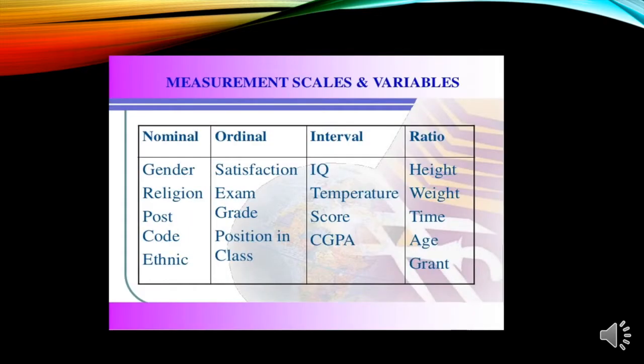We have the measurement scales and variables. As we have said, data are divided into four: nominal, ordinal, interval, and ratio. When we say nominal, it is all about gender. Some parts of data are gender, so you cannot categorize or rank them. We also have religion, so you cannot rank each religion, then postcode and ethnic. When we say ordinal, it is like satisfaction. You can rate the satisfaction.